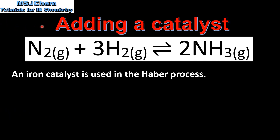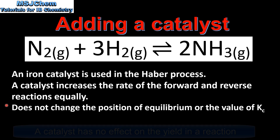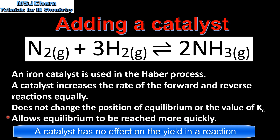Next we'll look at the effect of adding a catalyst. An iron catalyst is used in the Haber process. A catalyst increases the rate of both the forward and reverse reactions equally. It does not change the position of equilibrium or the value of Kc, but it does allow equilibrium to be reached more quickly.